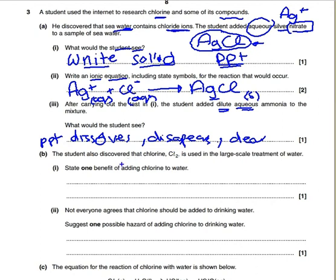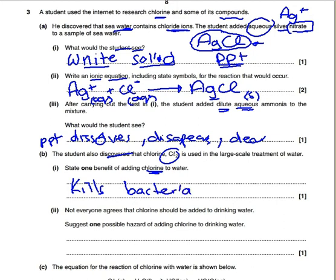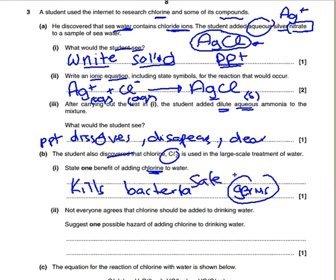The student also discovered that chlorine is used in large-scale treatment of water. State one benefit of adding chlorine to water. Chlorine is really toxic and it kills bacteria. If you're not doing A-level biology you could say it kills germs, but your aim is to describe the fact that it kills bacteria or microorganisms. You could also say it makes the water safe to drink.